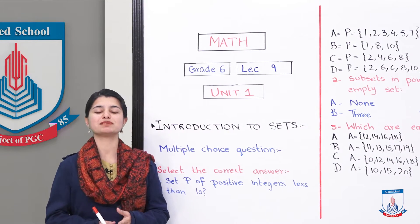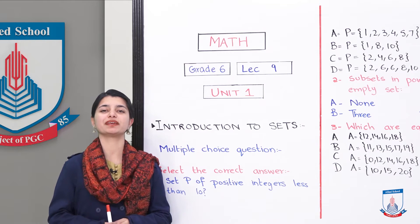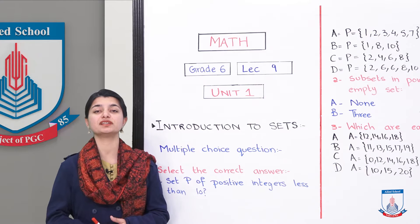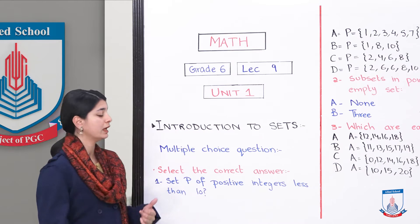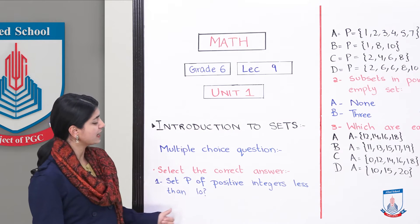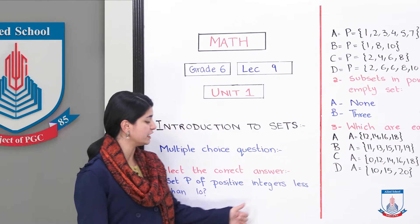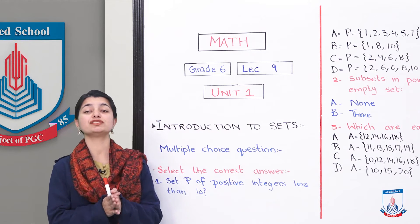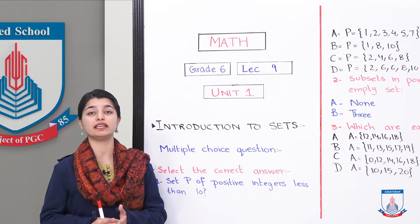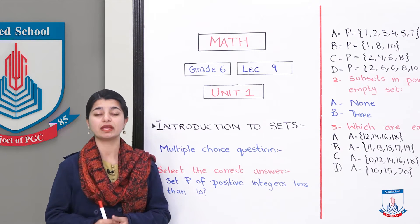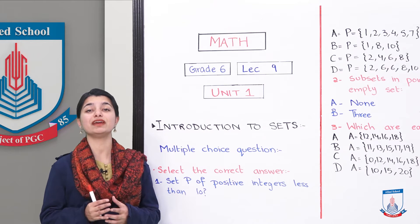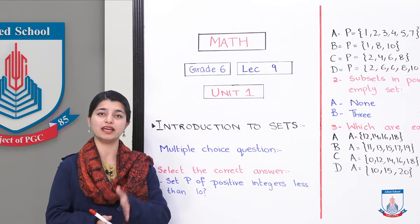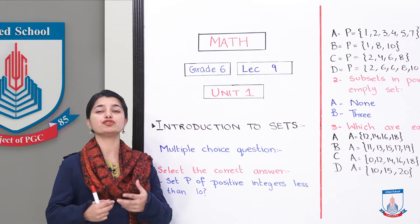I am expecting that you all are familiar with multiple-choice questions. We will start with the very first MCQ for chapter number 1. The first MCQ is: Set P of positive even integers less than 10 — what would it look like? You have to tell what the set P of positive even integers smaller than 10 would be. Positive integers are those on the number line after 0.